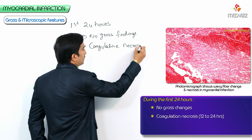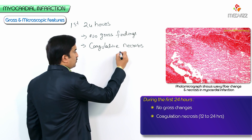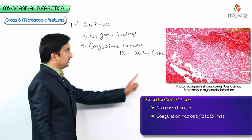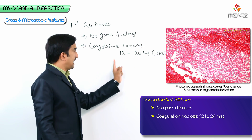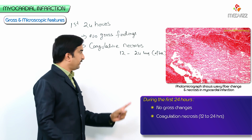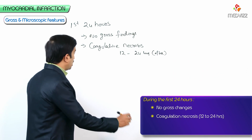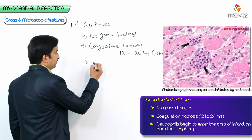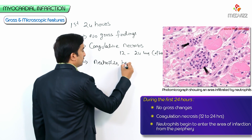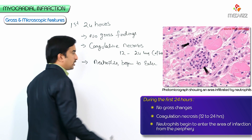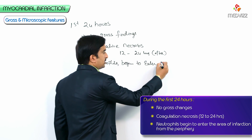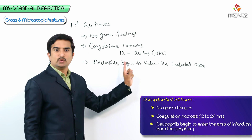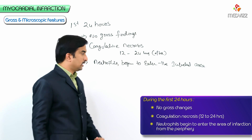Coagulative necrosis begins to appear from 12 hours and becomes evident only after 24 hours. At the same time, from 1 to 24 hours, another important finding is that neutrophils begin to enter the area of infarction from the periphery.